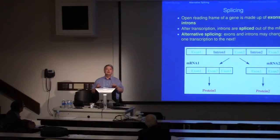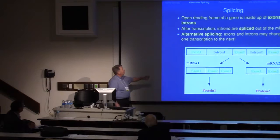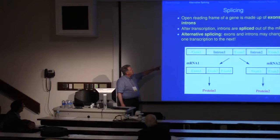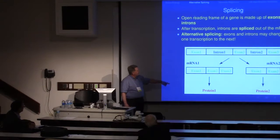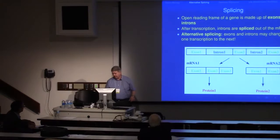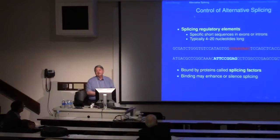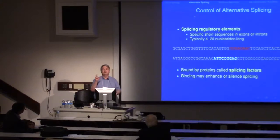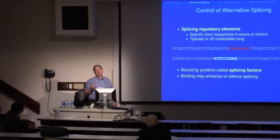You can get different products. Here's an example of an open reading frame with three exons and two introns. One way of splicing might give you exons one, two, and three, and therefore one protein product. Another way might leave out exon two and give you a different protein product. We're interested in how this is controlled — specifically, what are called splicing regulatory elements. These are short sequences inside either the exons or the introns that control whether splicing occurs and under what circumstances.